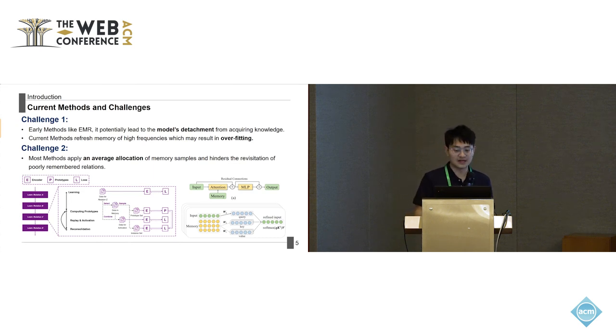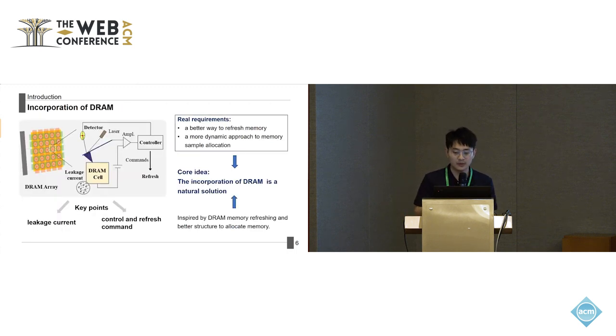Furthermore, most current methods apply a uniform allocation of memory samples across all relations. This average strategy can hide the realization of relations that are poorly learned. From the previous slides, we have some challenges to solve.